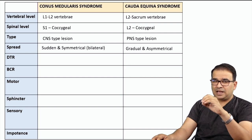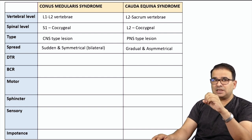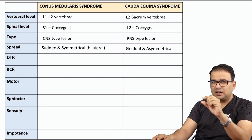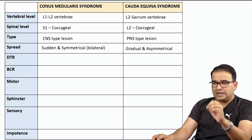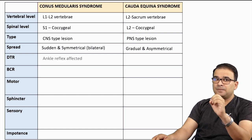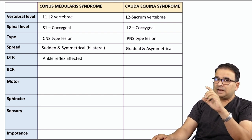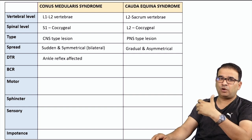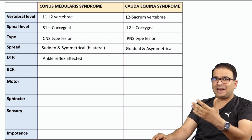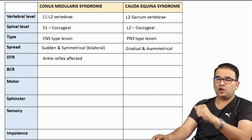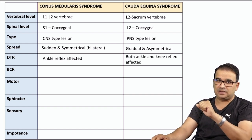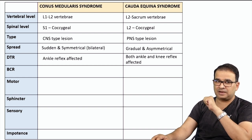For deep tendon reflexes: in conus medullaris, because of sacral involvement, only the ankle jerk reflex is affected. In cauda equina syndrome, because lumbar and sacral nerves are all involved as peripheral nerves, both the ankle and knee reflexes will be lost.